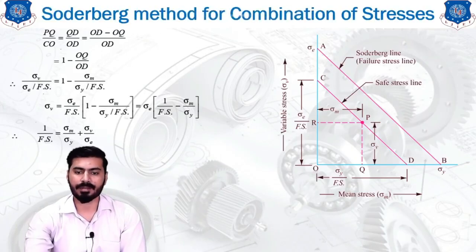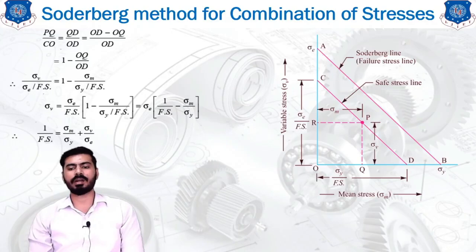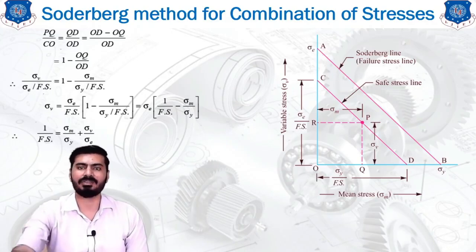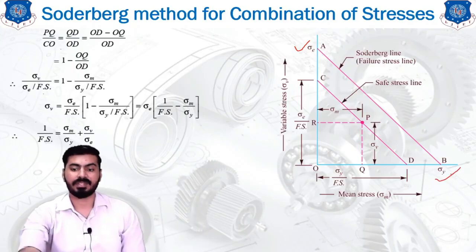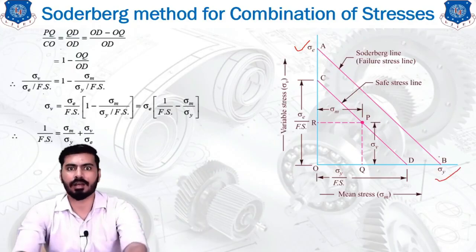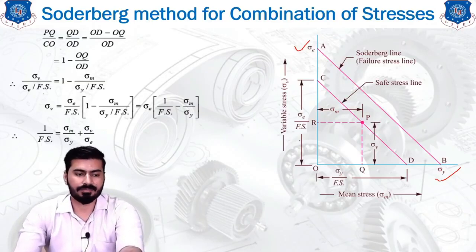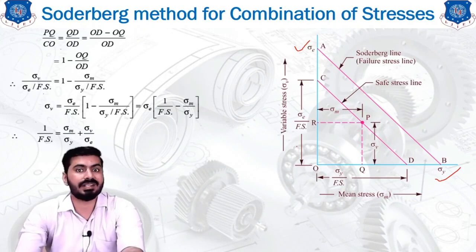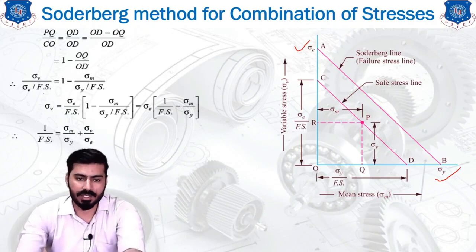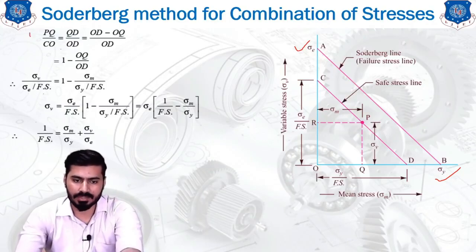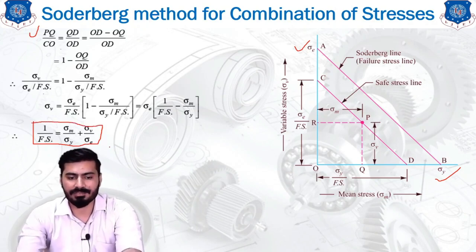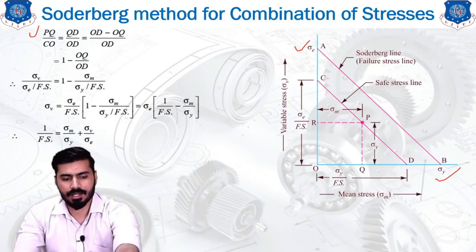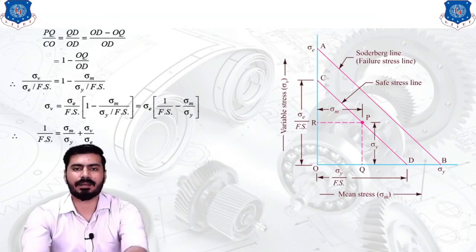Soderberg's method is another straight-line method, but the line runs between sigma-e and sigma-y (yield strength), making it a much more conservative approach. Because of this conservatism, it tends to produce more costly components and is generally not the preferred design method. Applying the same similarity rule, the Soderberg equation simplifies to: 1/fs = sigma-m/sigma-y + sigma-v/sigma-e.